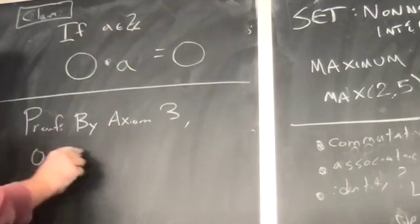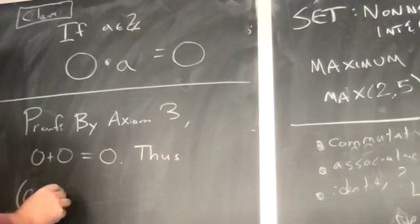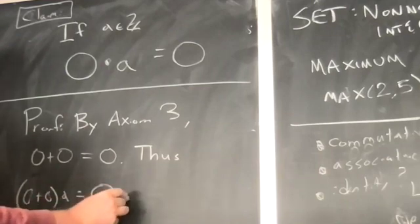By axiom 3, 0 plus 0 equals 0. So thus, 0 plus 0 times A is equal to 0 times A.